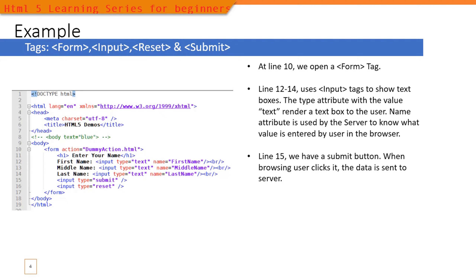At line 15 we have a submit button — when the user clicks it, the data is sent to the server. Looking at the form tag, we specified the action attribute as 'dummy_action.html', meaning we are sending data to an HTML document in the same folder. In actual usage this would be an HTTP address and a server-side processing script. The submit button is tied to that action, so clicking it sends all data collected through the input elements to the target specified in the action attribute.